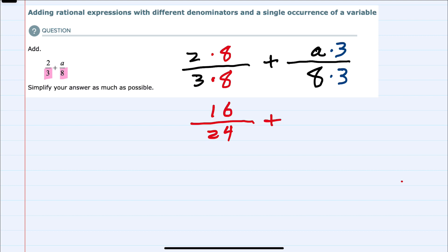On the right hand side I now have a 24 in the denominator and a times 3 in the numerator which is just 3a. So we've taken care of the first issue which was having a common denominator. We now have a common denominator 24.